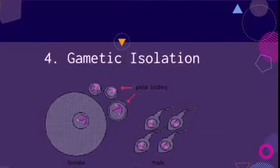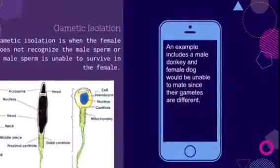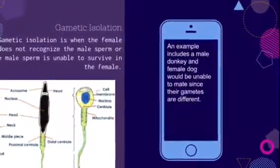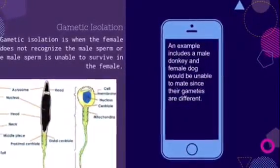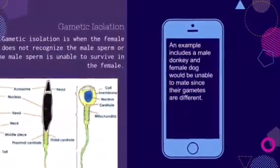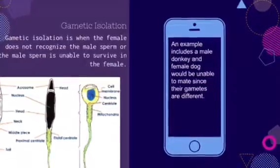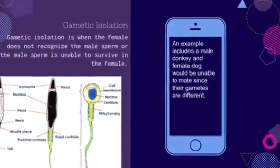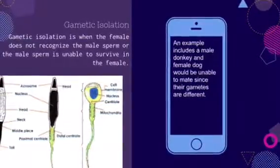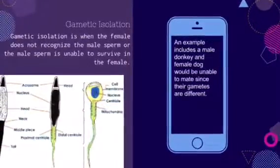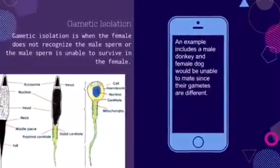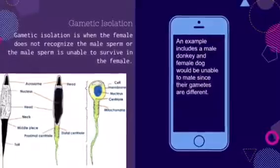Comedic isolation is when the female does not recognize the male sperm, or the male sperm is unable to survive in the female. An example includes a male donkey and female dog, who would be unable to mate since their gametes are different.